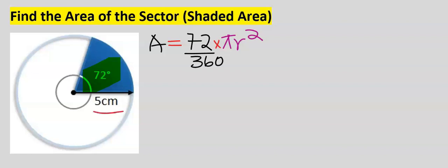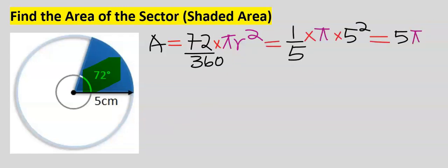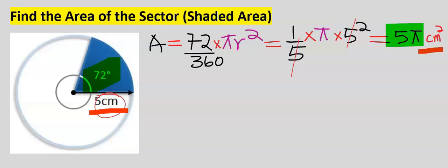Next, substitute for the radius. Simplifying — the 5s cancel, and we are left with 5π. Next, consider the units: the radius is in centimeters, so the area is in centimeters squared. We have left our answer in terms of π.